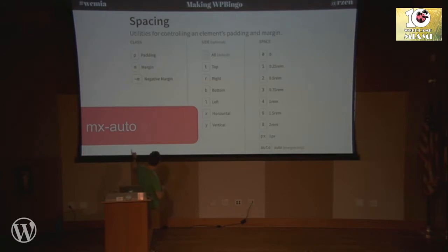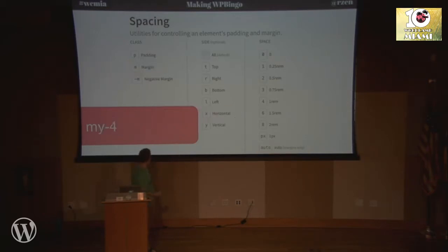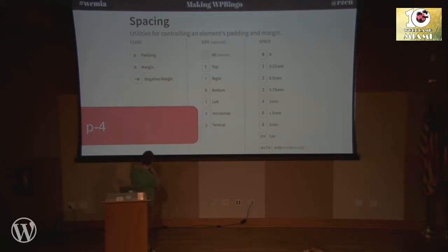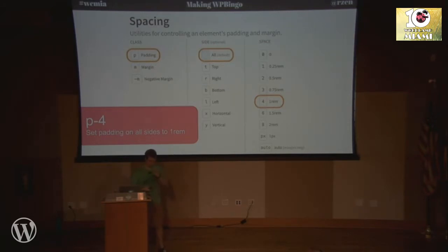For example, mx-auto means margin horizontal auto — margin-left auto and margin-right auto. my-4 is like saying margin-top 1rem and margin-bottom 1rem. And p-4 would be padding 1rem all the way around. It's really slick — just a couple of characters added to your element, and you can tell from looking at the element how it's going to be styled without having to go to your stylesheet. Which on paper sounds awesome.